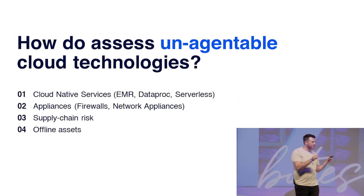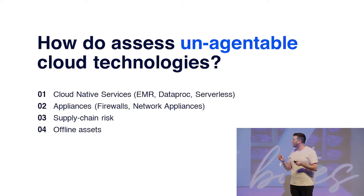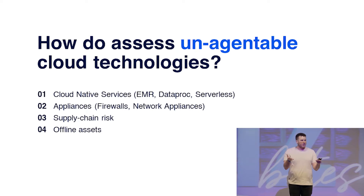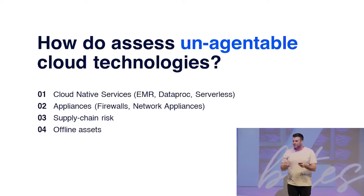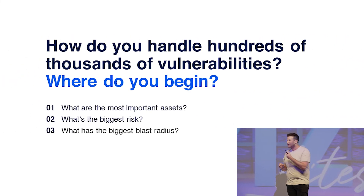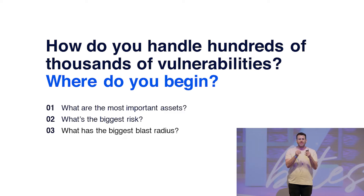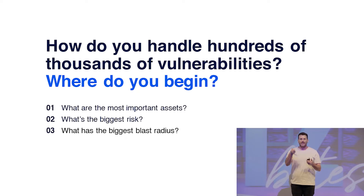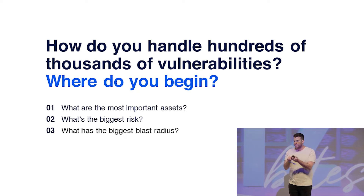Also, the cloud introduces a new set of technologies that are unagentable and unscannable — and these are new words I just invented. Think of it: if you use a firewall from the AWS Marketplace, you cannot scan it, you cannot install an agent on it. What about serverless? What about cloud-native services? You have huge blind spots of vulnerabilities. And how do you face hundreds or maybe millions of vulnerabilities? How do you assess which resources are at the most critical risk, which have the biggest attack surface, which have the biggest blast radius? The cloud makes it so much more complicated than on-prem to answer those questions.